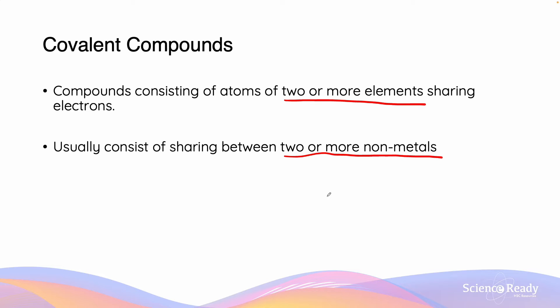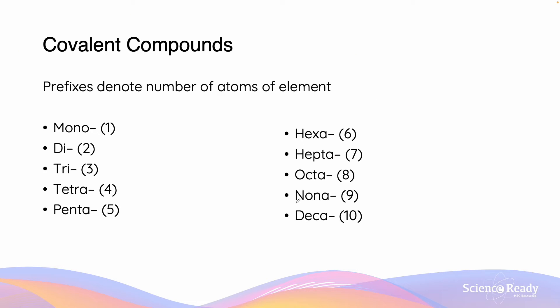Although some exceptions do exist, we will not be discussing that for the purpose of the NSW chemistry syllabus. When we are naming covalent compounds, prefixes are required to denote the number of atoms of each element.